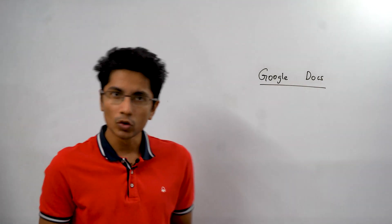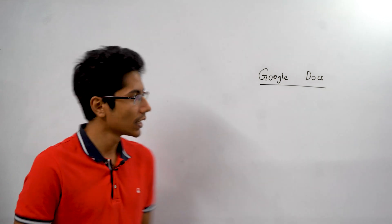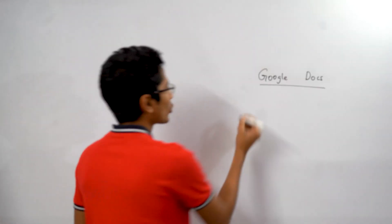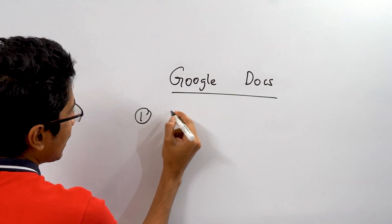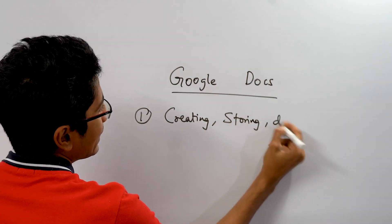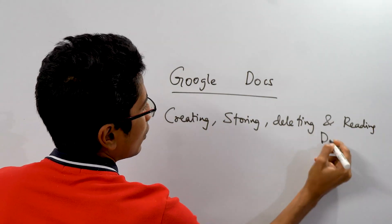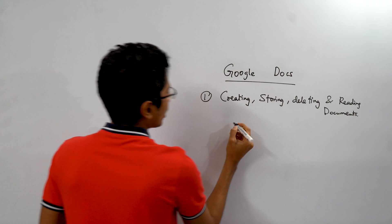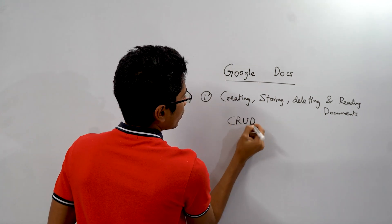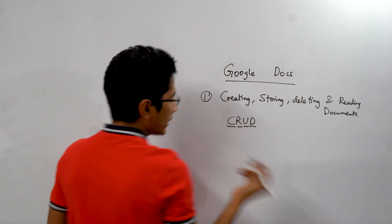Google Docs is a very popular app used for creating and storing documents. The first feature that you can imagine will be creating, storing, deleting and reading documents. So as engineers you can think of the CRUD model here again: create, read, update and delete.